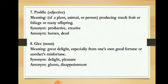Next is Glee — meaning great delight, especially from one's own good fortune or another's misfortune. So this kind of happiness can come when you are very lucky, or when someone competing with you is unlucky. Synonyms are delight and pleasure; antonyms are gloom and disappointment.